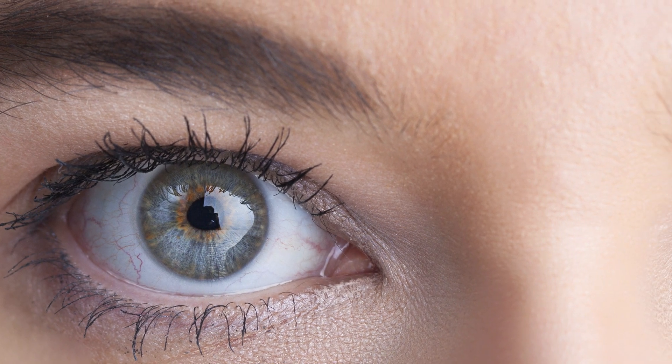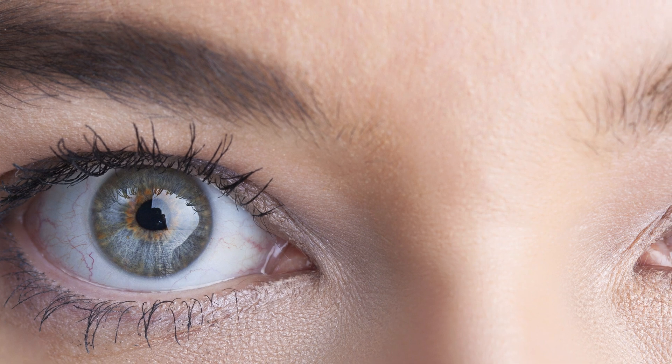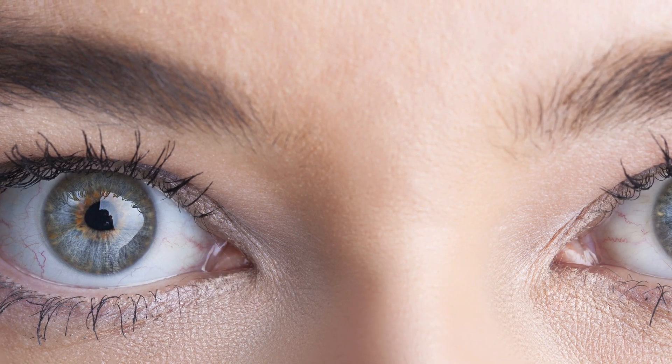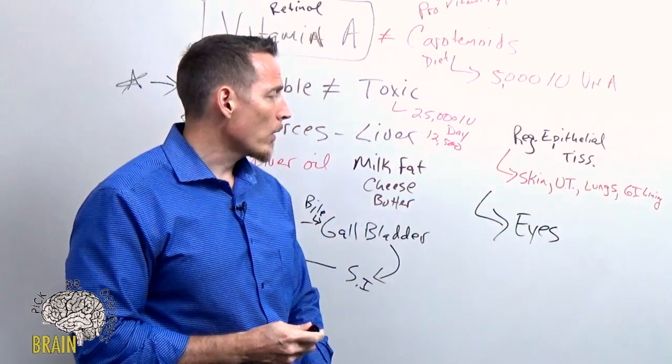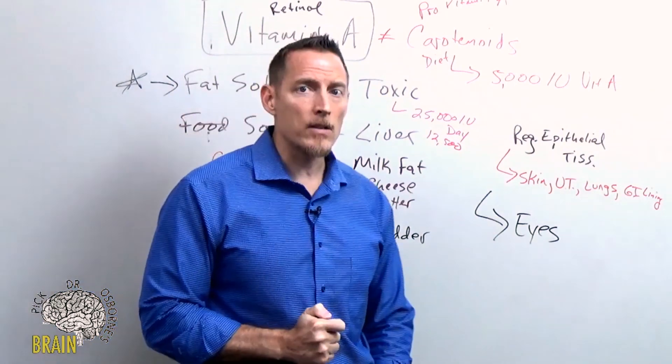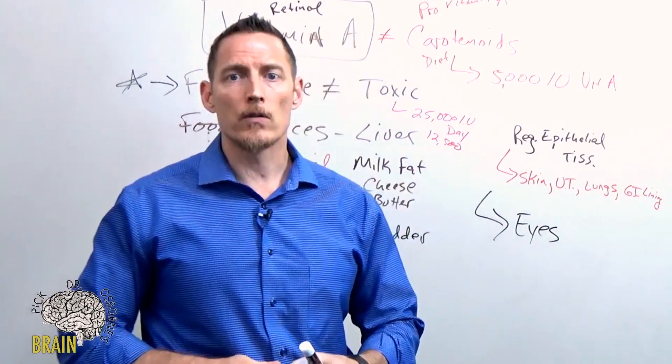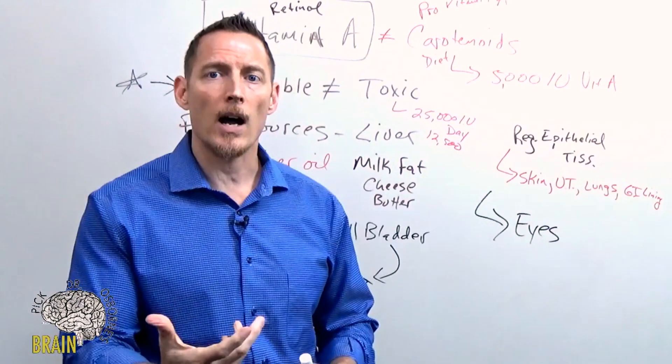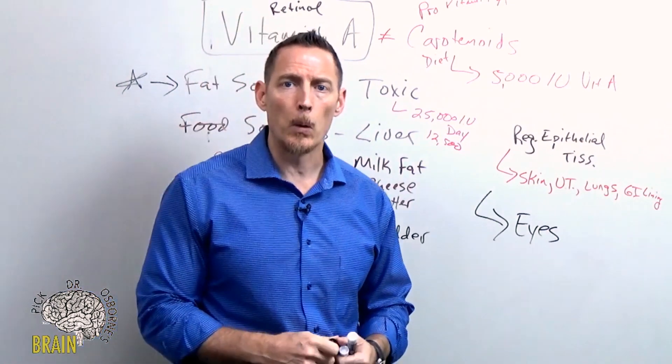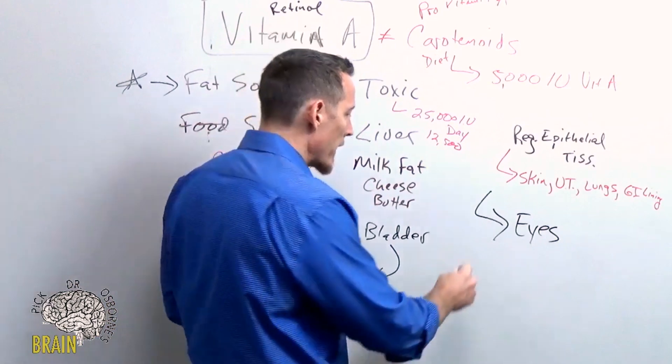It can cause cloudy vision and ultimately lead to blindness, so vitamin A is very important for eye function. Without adequate vitamin A, some people actually start to lose parts of their vision, and their vision becomes more and more poor over time.